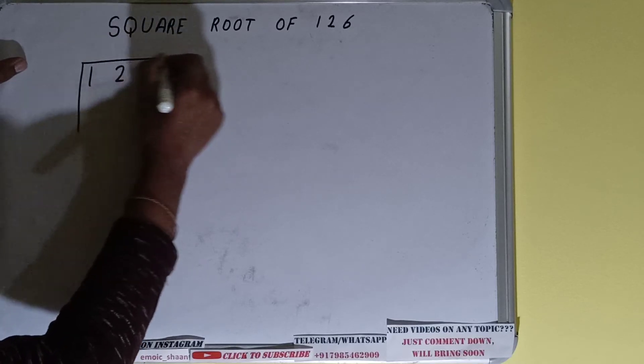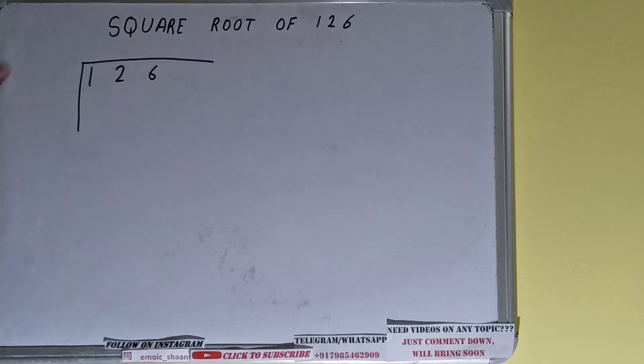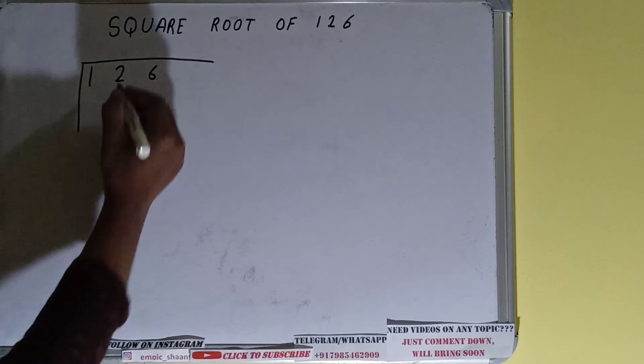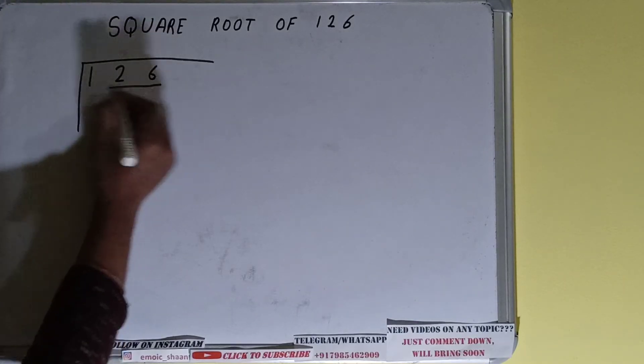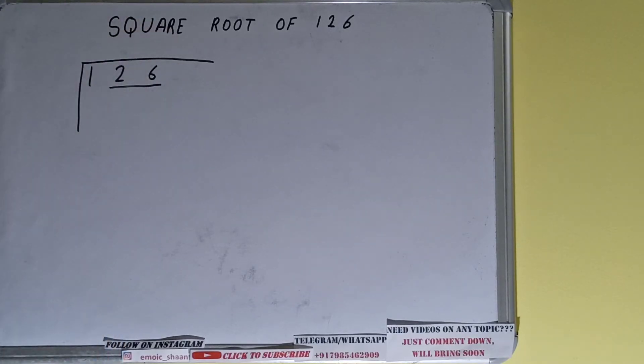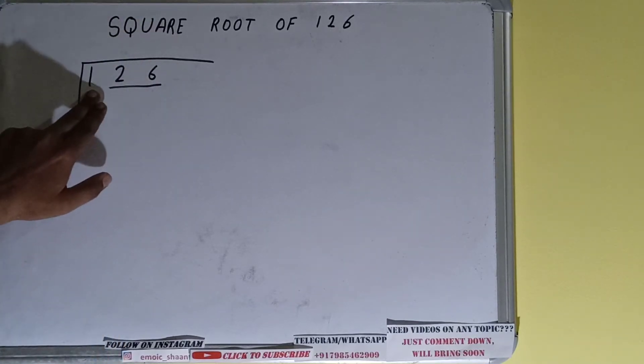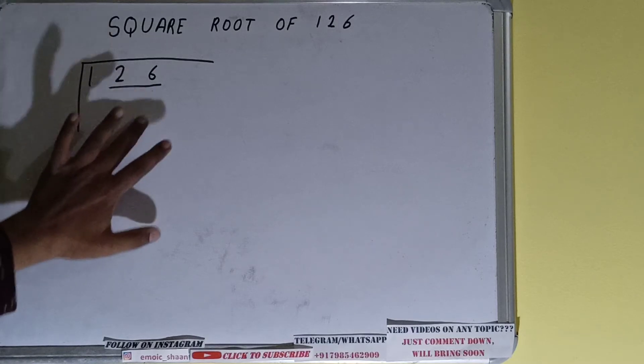The next thing we need to do is divide the number into pairs. One pair is this and this one is left out. We'll first divide this one and then bring down numbers in pairs.